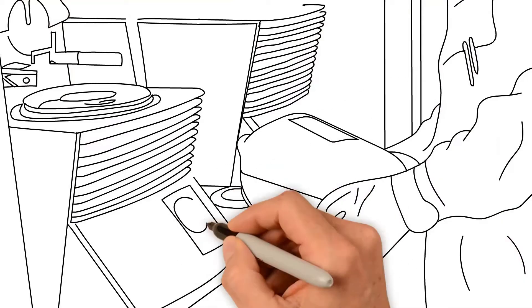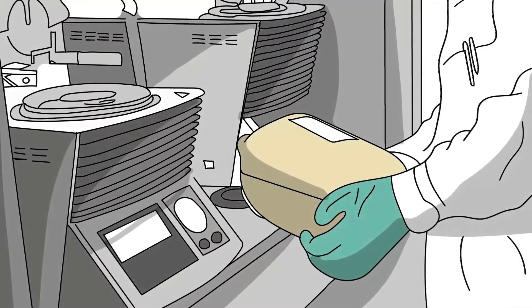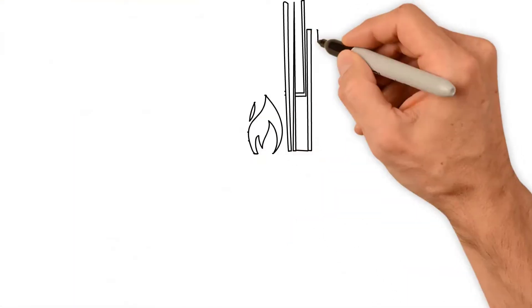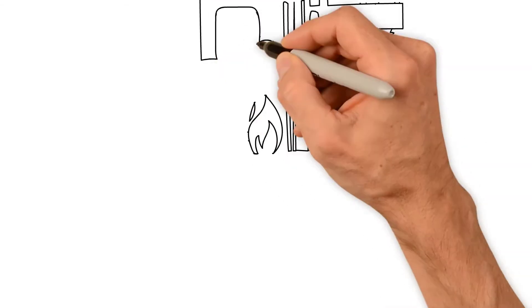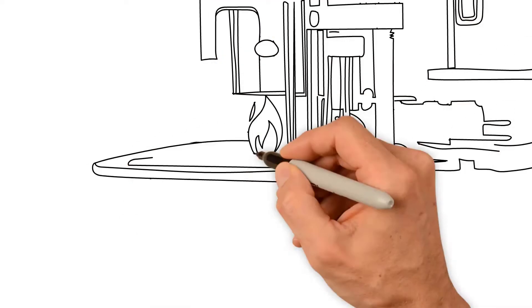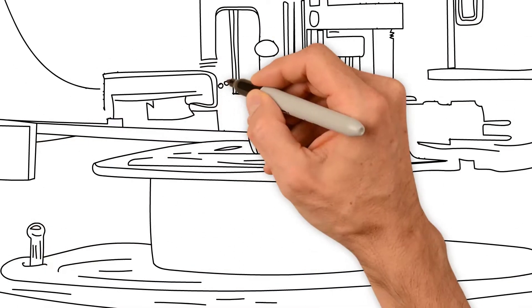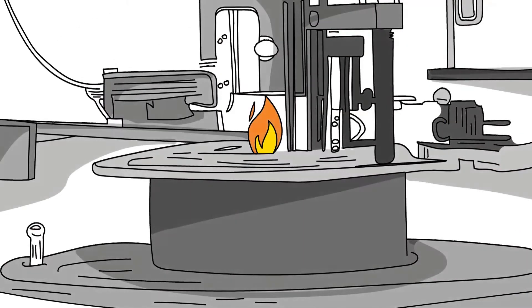The sample is slowly heated, generating flammable vapors above the sample. An ignition source periodically passes near the surface of the sample. The temperature at which the sample briefly ignites is recorded as the flash point.